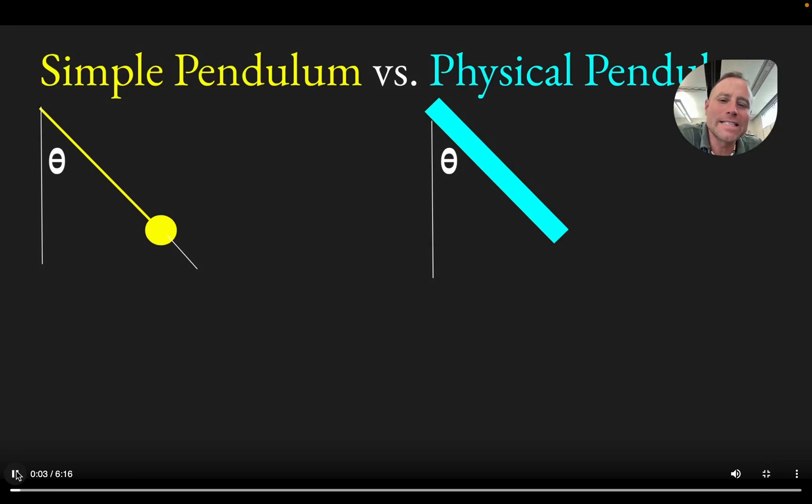All right, my friends, we are going to look at the simple pendulum, which is just a mass on the end of a string versus a physical pendulum, which is when you hang pretty much any object from one point and then let the object swing back and forth. So in this case, the physical pendulum is going to take the form of this blue stick that you see here.